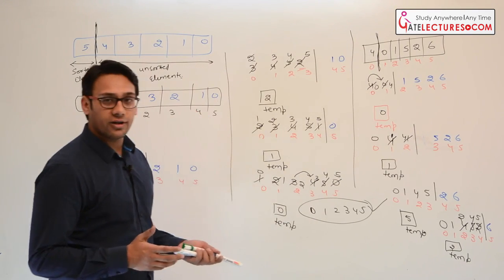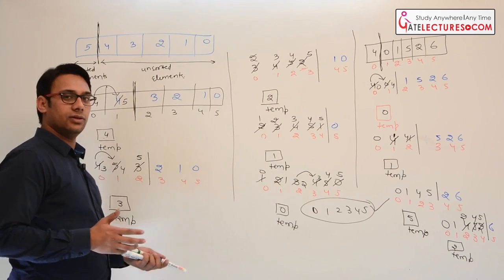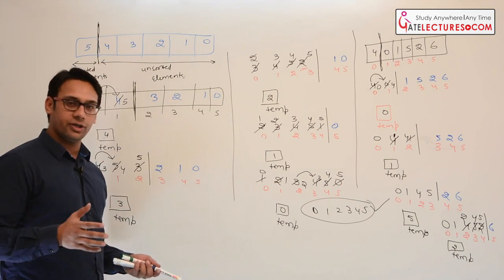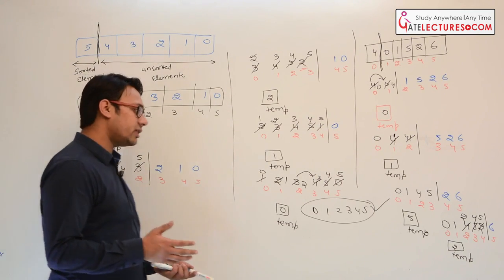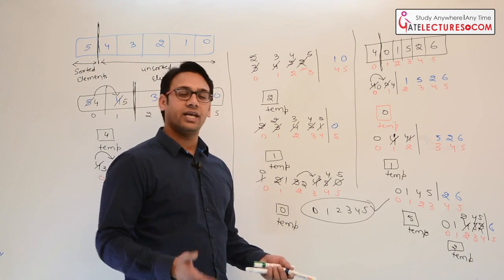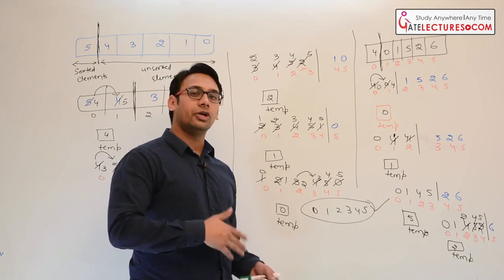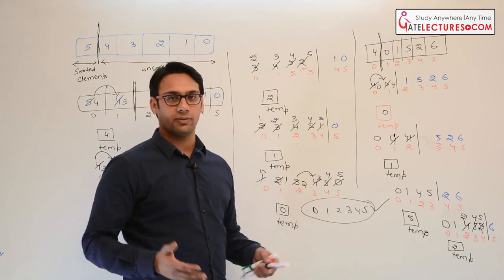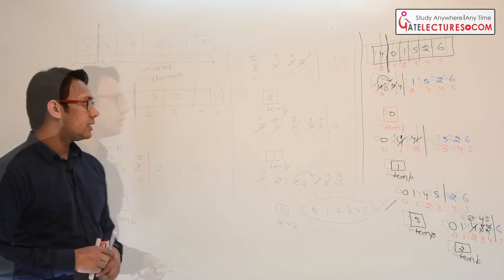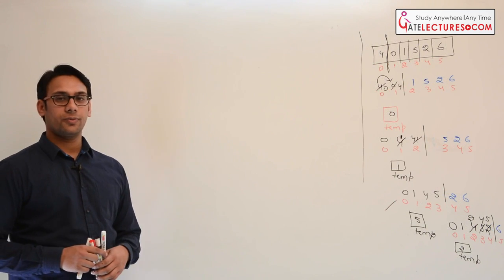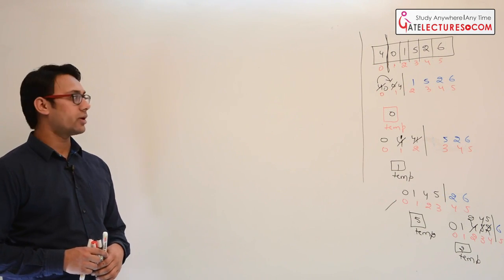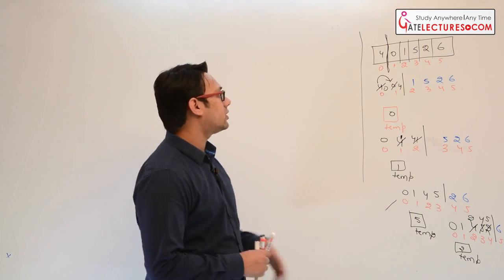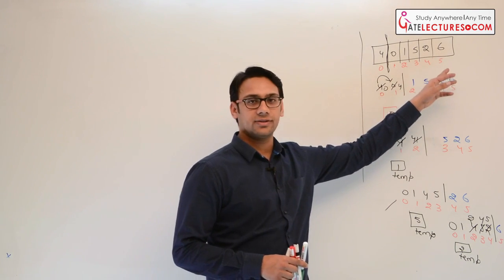Now see if you can write a program for insertion sort. Pause the video, try to write the program, then continue. Now let us discuss the insertion sort program. If we have to sort n elements, how many times do we shift the window? At most, we have to shift the window n minus 1 times, because one element is already sorted.